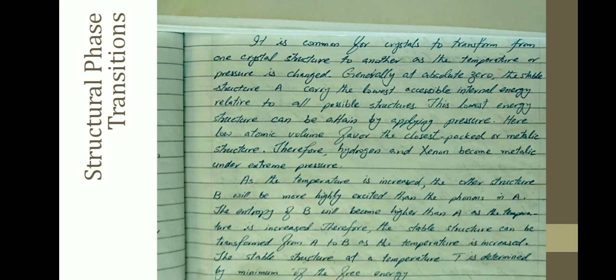As the temperature is increased, the other structure will be more highly excited than the phonons. The entropy of B will become higher than A as temperature is increased. Therefore, the stable structure can be transformed from A to B as the temperature is increased. The stable structure at temperature T is determined by minimum of the free energy. When we increase the temperature, the material will increase the energy, and when we decrease pressure, the pressure will also affect this.